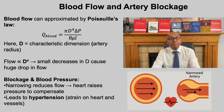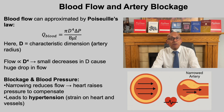Even moderate plaque buildup can reduce blood flow significantly, and the heart must compensate by generating higher pressure, which contributes to hypertension. Clinically, narrowing of coronary arteries reduces oxygen supply to the heart muscles, causing angina or heart attack. Narrowing in brain arteries can lead to stroke. Medical interventions such as stents, bypass surgery, or angioplasty work by restoring the vessel diameter, and because of the radius-to-the-fourth-power scaling, even small increases in diameter can dramatically improve blood flow.